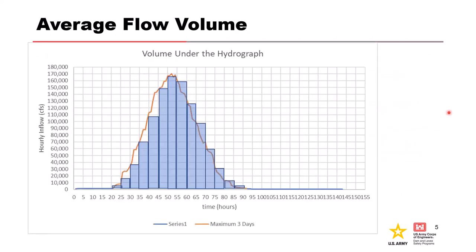Flow rates are averaged over the desired duration and are reported as a flow rate. This volume represents the volume under the hydrograph over that duration. For this example, the maximum three days of flows were averaged, resulting in approximately 73,700 cfs. If we look at the area under the curve approximated in five-hour intervals shown as blue bars, we calculate approximately the same result — it's just averaging, equivalent to the area under the hydrograph curve.